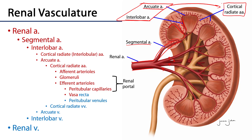These cortical radiate arteries give rise to several afferent arterioles. The afferent arterioles feed into specialized capillary beds called glomeruli, where glomerular filtration occurs. A glomerulus then feeds into an efferent arteriole. So afferent arterioles arrive at the glomerulus, and efferent arterioles exit the glomerulus. The efferent arterioles supply peritubular capillaries, as well as elaborations of peritubular capillaries called vasa recta, which translates to straight vessels, associated with nephron loops of juxtamedullary nephrons.